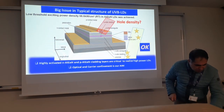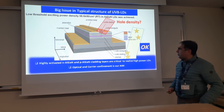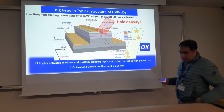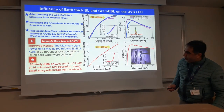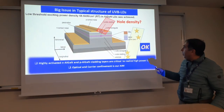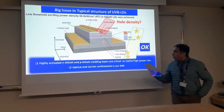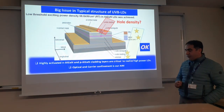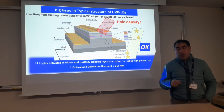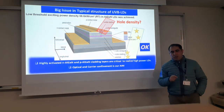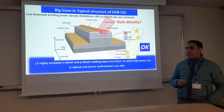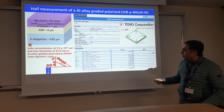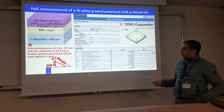We are still struggling to improve our results. In all our devices, we believe that hole injection from the P-side to the quantum well is not enough. For UVB LEDs or laser diodes, we need a hole density of 2×10^16 per cubic centimeter. For that purpose, we introduced a new device structure.